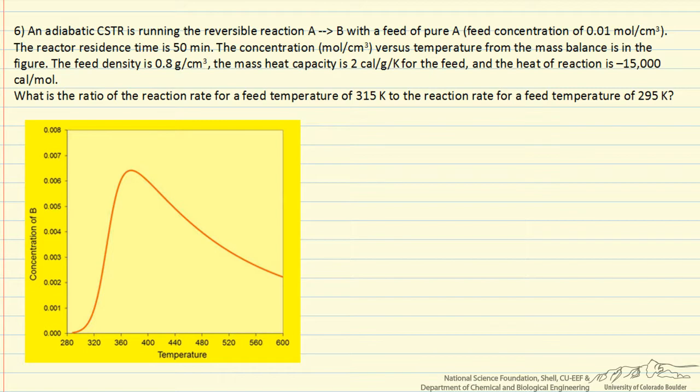So this means we're going to write down the energy balance that we want to solve simultaneously with the mass balance, and we want to now plot this energy balance on the same plot. Energy balance for an adiabatic CSTR at steady state really just has two terms. There's no accumulation. There's a term density times volumetric flow rate, which is a mass flow rate, times a mass heat capacity and a temperature difference. This is the energy if you'd like to heat up the feed to the reactor temperature.